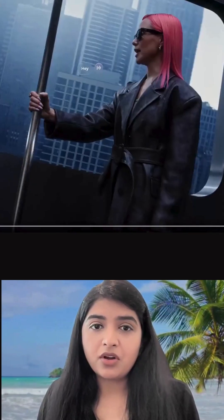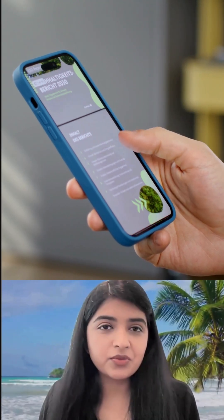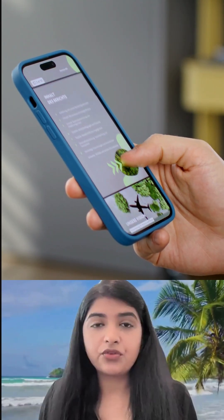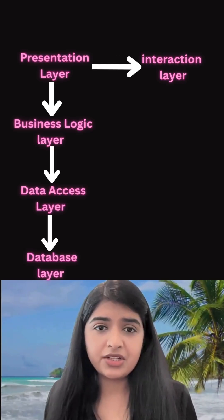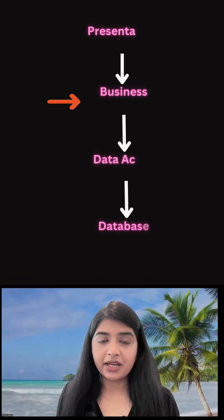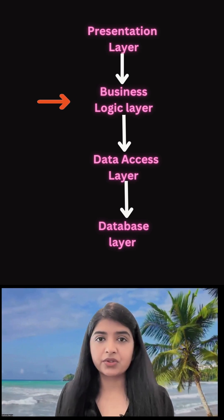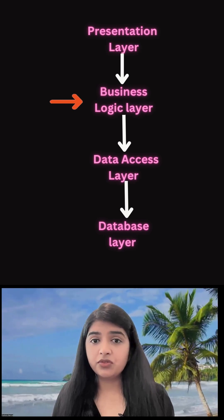Companies like Meta and Google are launching smart glasses. OpenAI is launching I.O., a screen-free AI companion. All of these innovations will reduce the need for traditional screens like phones or tablets, which means your presentation layers will translate into AI agent interactions. Currently in SaaS applications, the business logic is baked into your backend code in your business logic layer. This will move to an agentic layer.